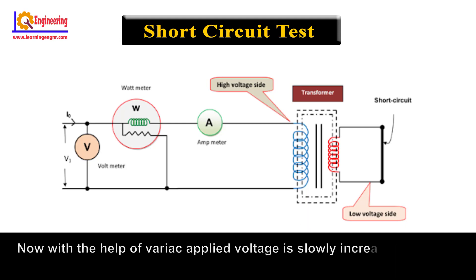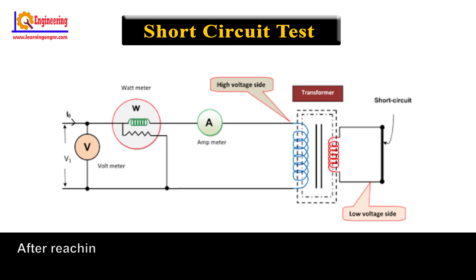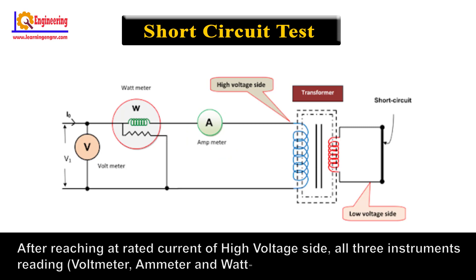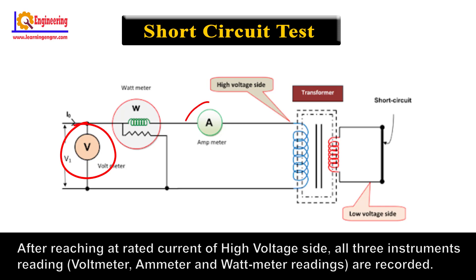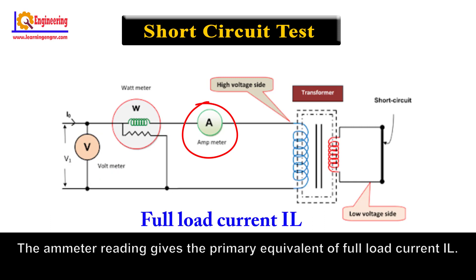With the help of the variac, the applied voltage is slowly increased until the ammeter gives a reading equal to the rated current of the high voltage side. After reaching the rated current of the high voltage side, all three instrument readings — voltmeter, ammeter, and wattmeter — are recorded. The ammeter reading gives the primary equivalent of the full load current IL.